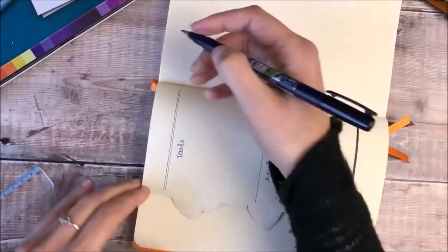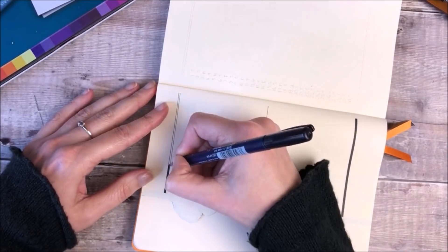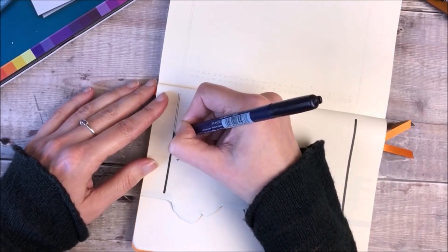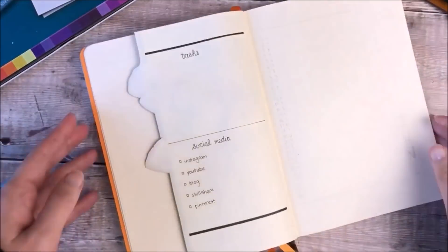I'm now using the Fudenosuke to add some thicker black lines to tie in with the black lines that I've got on the cover page.